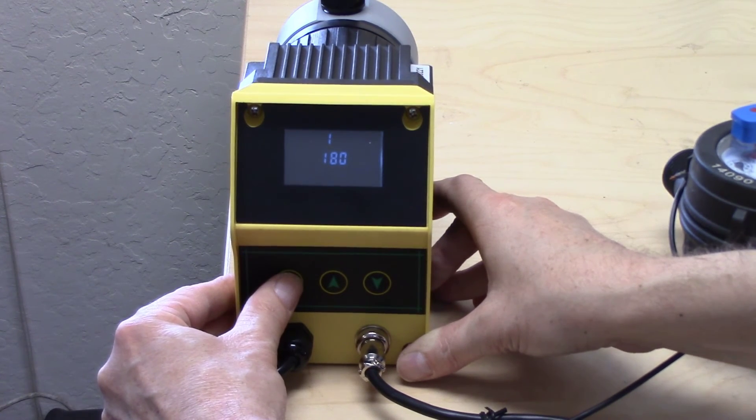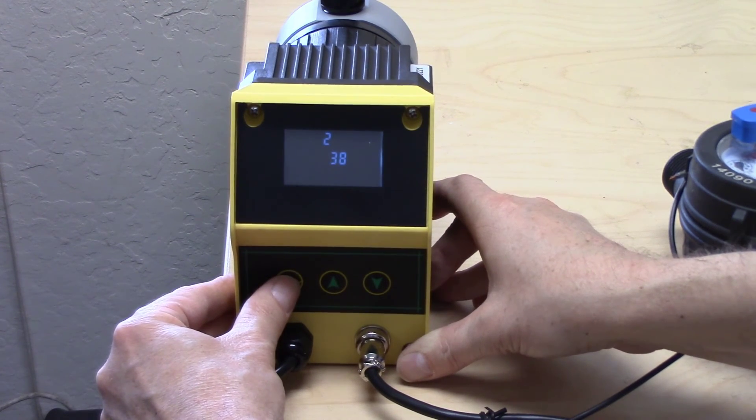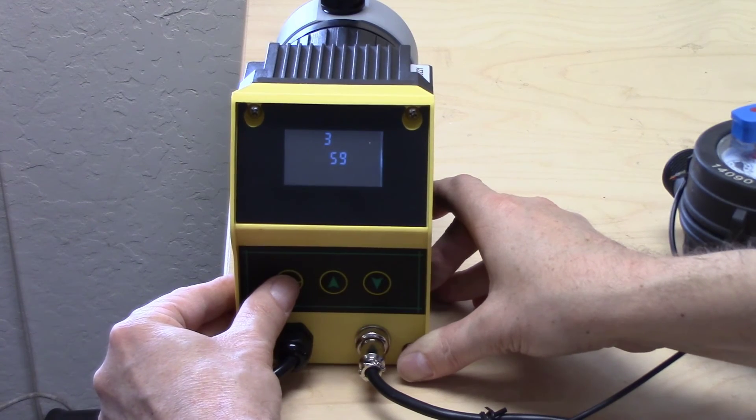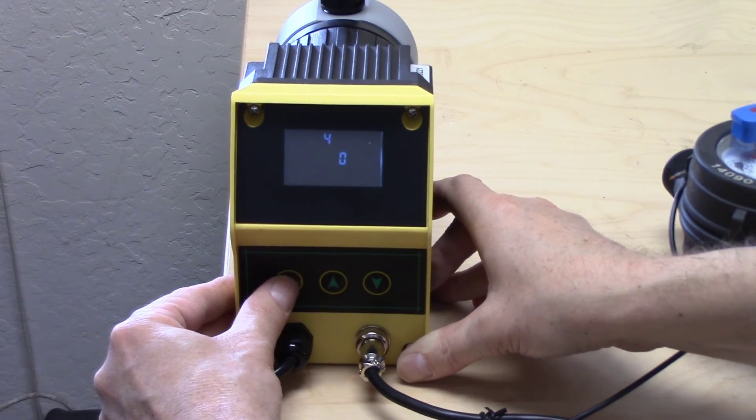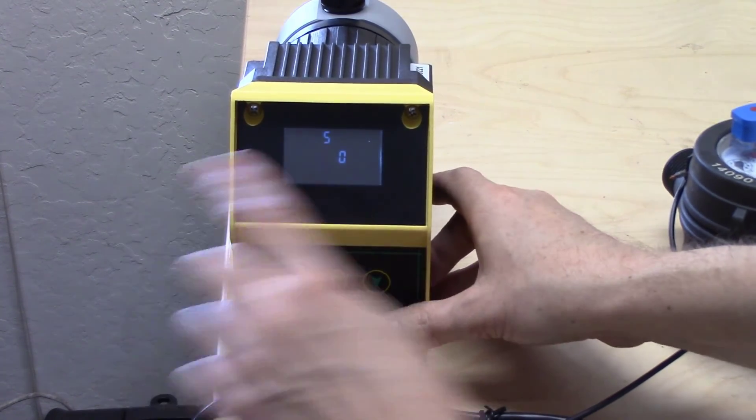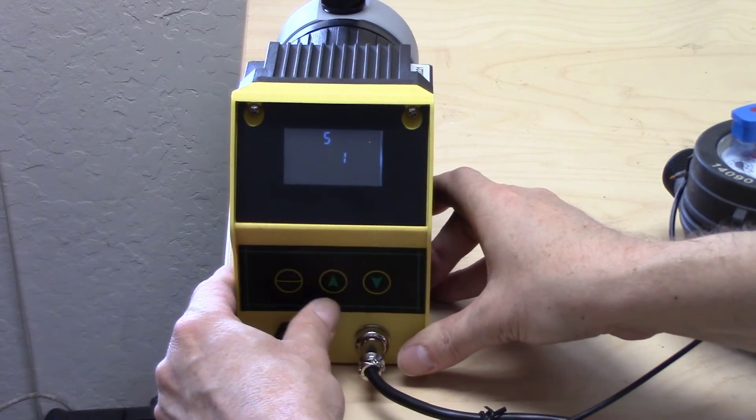Zero does not matter. One must be at 180. Two must be at 38. Three does not matter. Four does not matter. Five is where you control. Zero is manual, one is pulse.